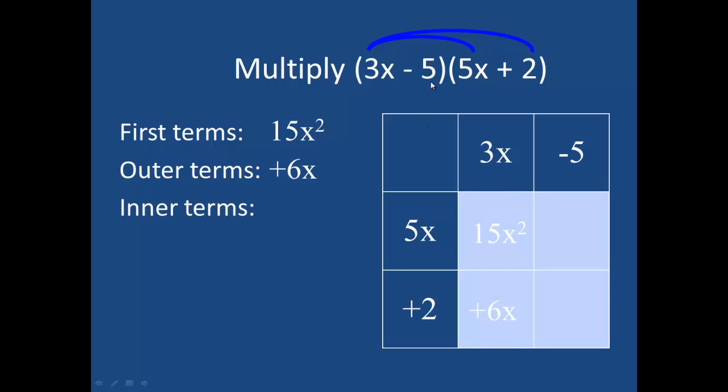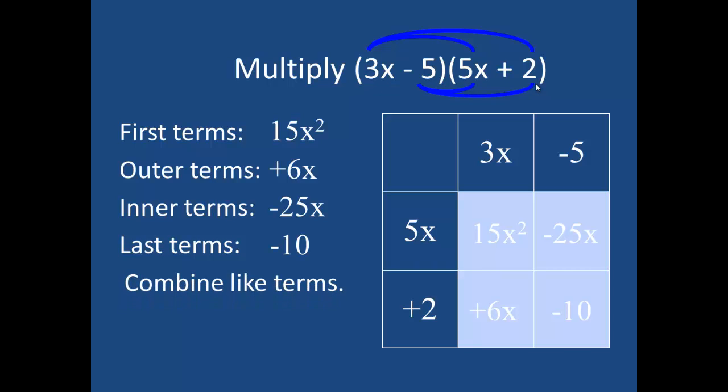I would then do the inner terms. That's the second term here distributed to the next polynomial, and I would get negative 25x. And lastly, it would be negative 5 times 2 for negative 10. So again, when I combine like terms, I get the very same answer regardless of which three methods I use. This was example 5, so there's not a spot for this in your notes because we've already done this example.